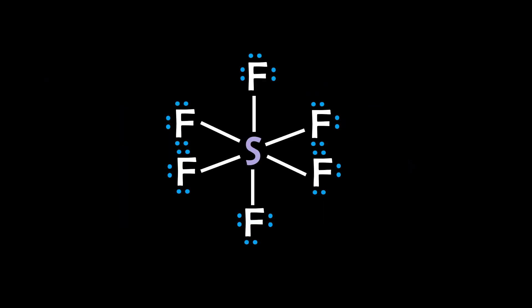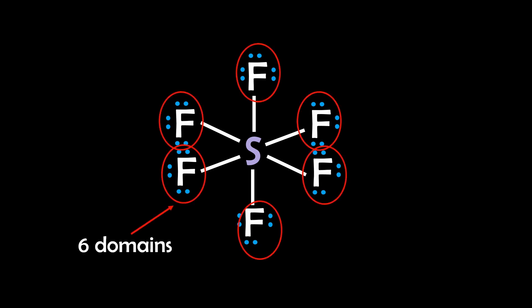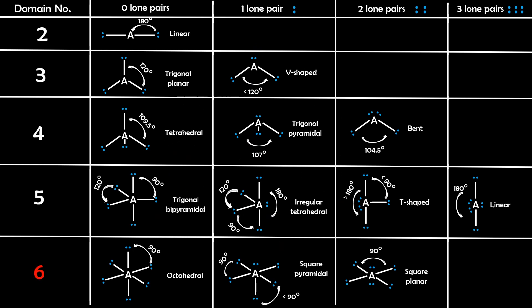Example 4: Sulfur hexafluoride. Sulfur has six bonded atoms and no lone pairs. This gives us six electron domains, leading to an octahedral geometry.